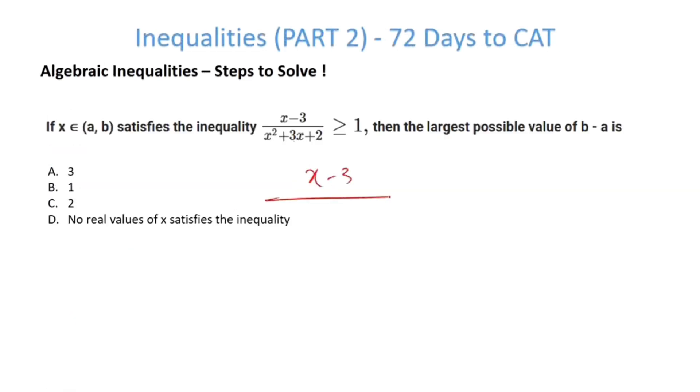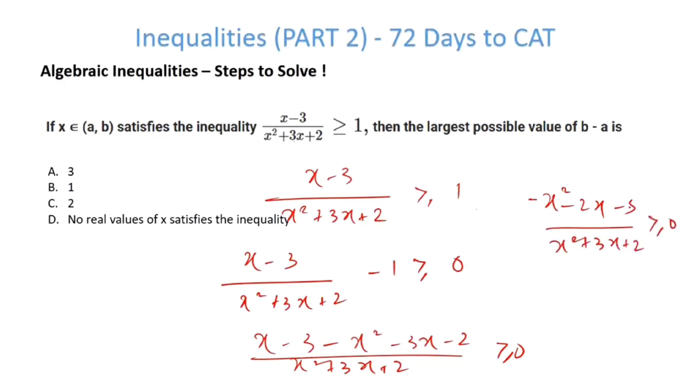Here, I have x minus 3 x square plus 3x plus 2 greater than equal to 1. Now, if I just take 1 to the other side. So, whenever you have something like this, always take 1 to the other side. Make it 0 on one side. Now, this becomes x minus 3 minus x square minus 3x minus 2 divided by x square plus 3x plus 2 greater than equal to 0. Now, here I have minus x square minus 2x minus 5 x square plus 3x plus 2 greater than equal to 0.